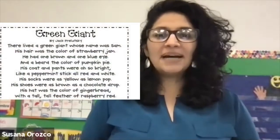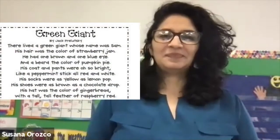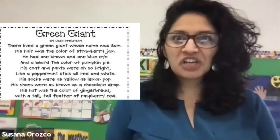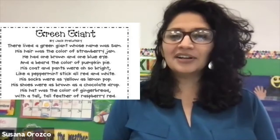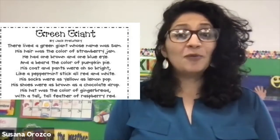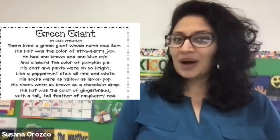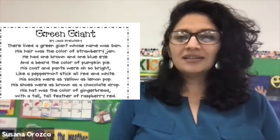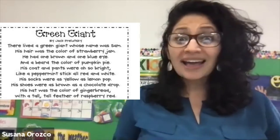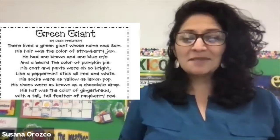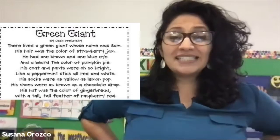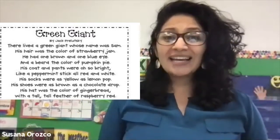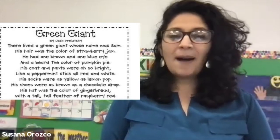You ready for poem number one? The title is "Green Giant" by Jack Prelutsky. There lived a green giant whose name was Sam. His hair was the color of strawberry jam. He had one brown and one blue eye, and a beard the color of pumpkin pie. His coat and pants were oh so bright, like a peppermint stick, all red and white. His socks were as yellow as lemon pop.